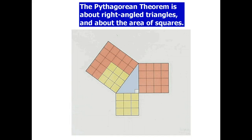Now the Pythagorean theorem is a statement about right angle triangles and also about the areas of squares.